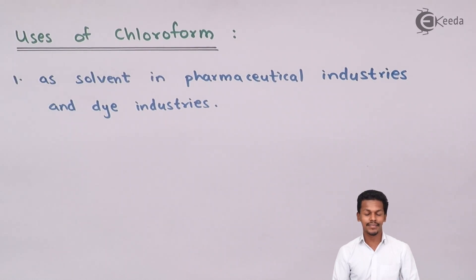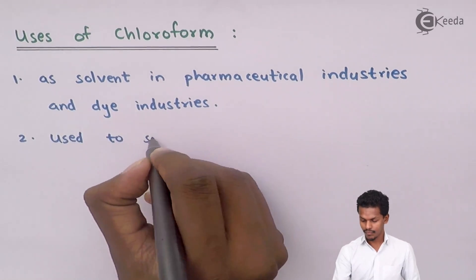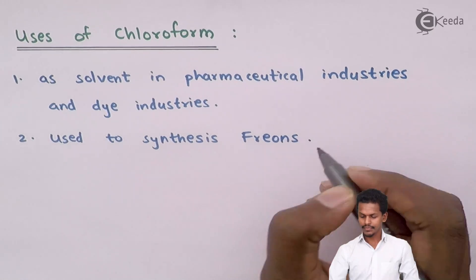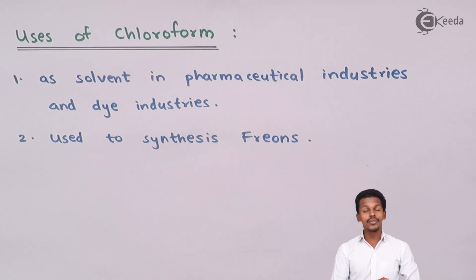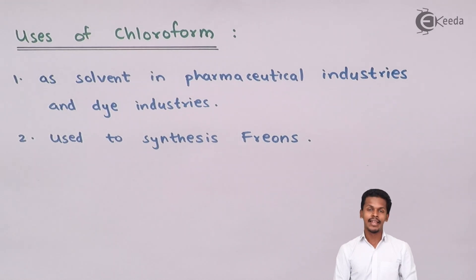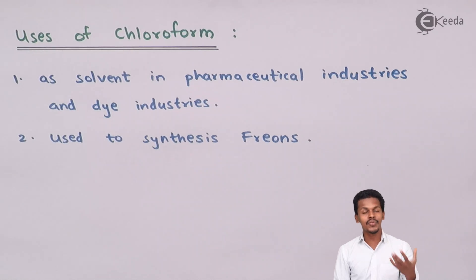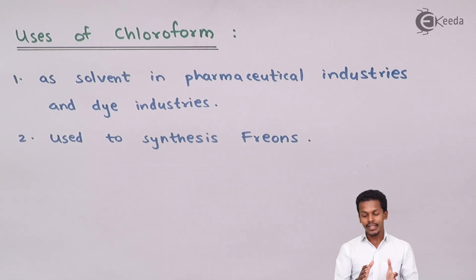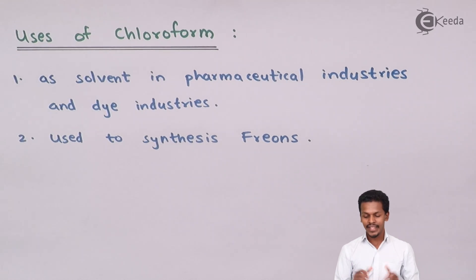The second use of chloroform is that it is used to synthesize freons. Freons contain carbon fluorocarbon components, which were used in refrigerators and air conditioners to give a cooling effect. Chloroform is used to prepare such freon compounds. These are some of the uses of chloroform.